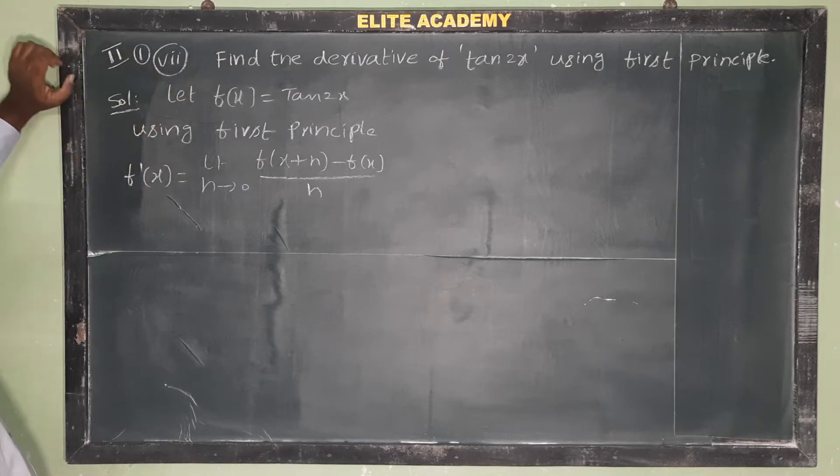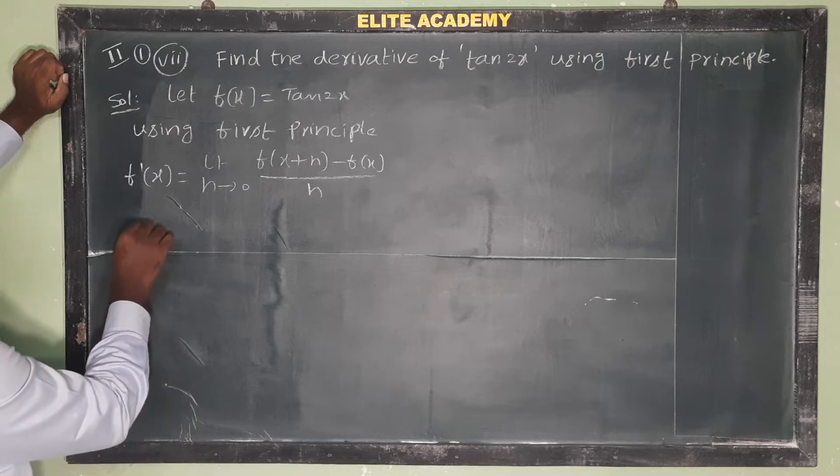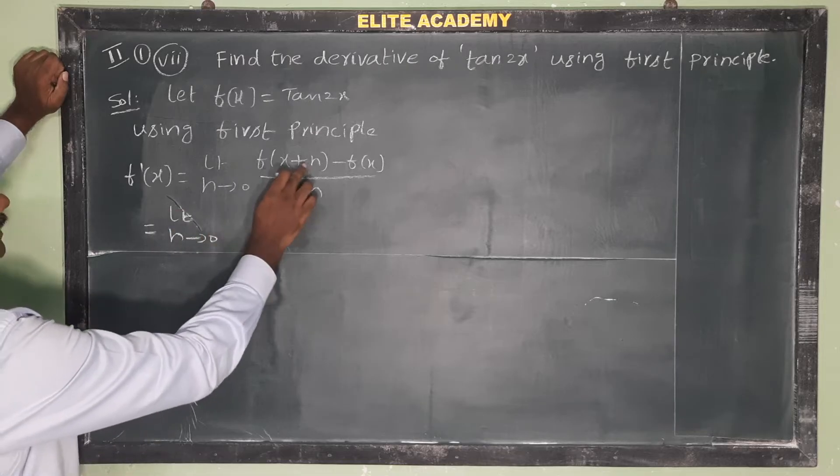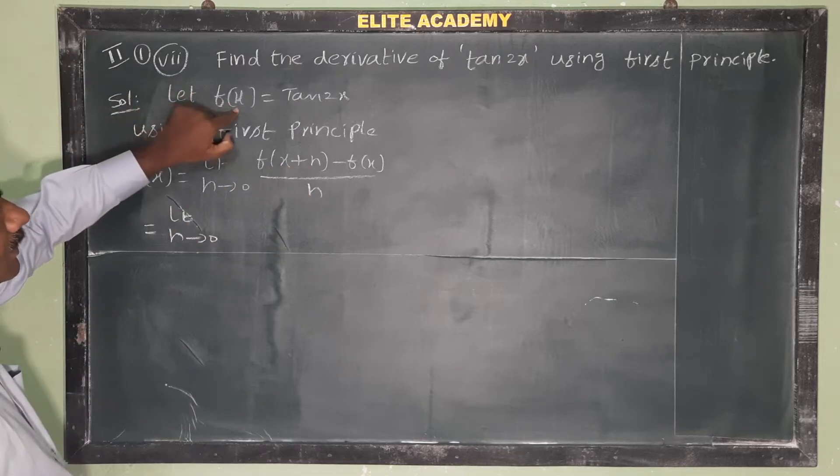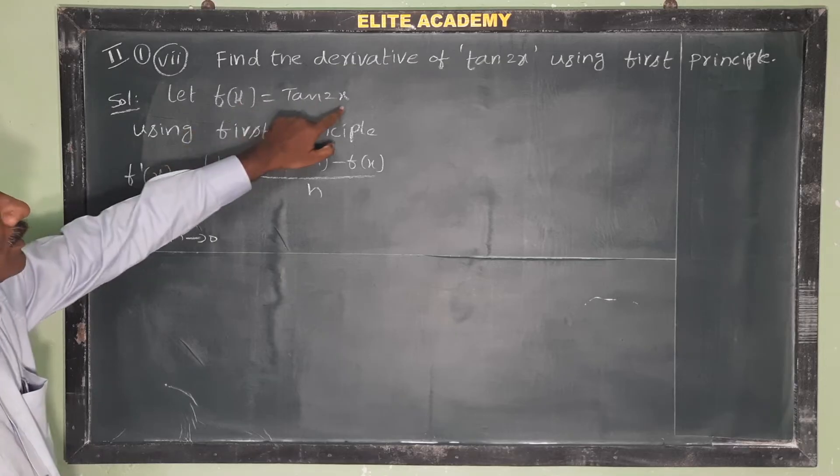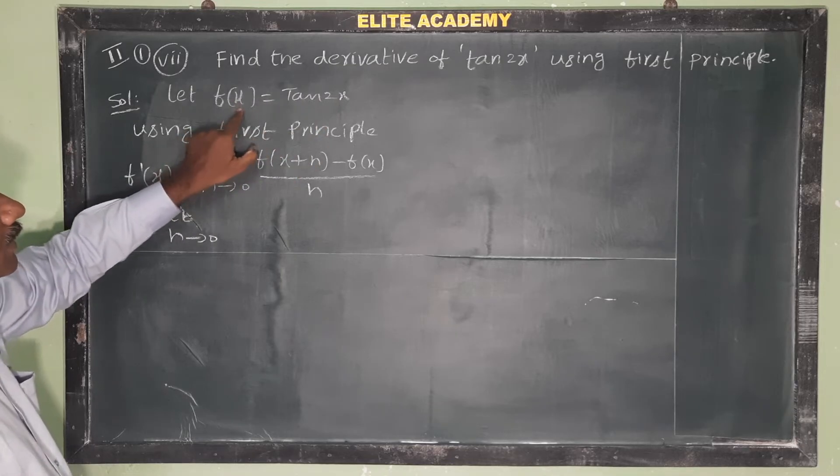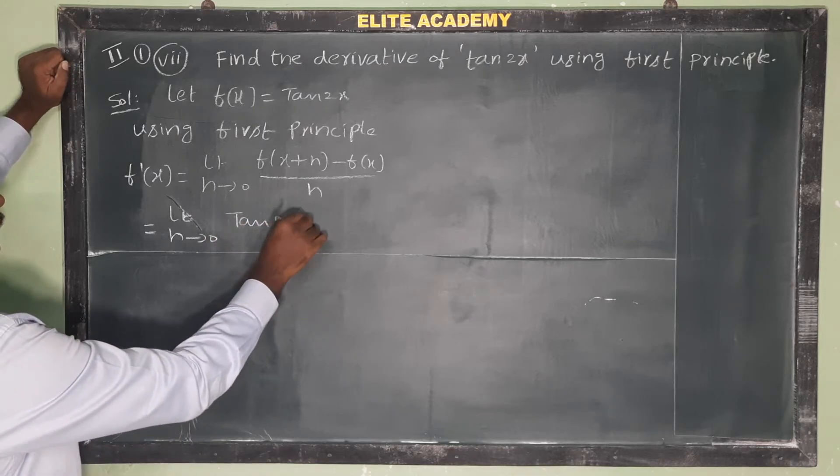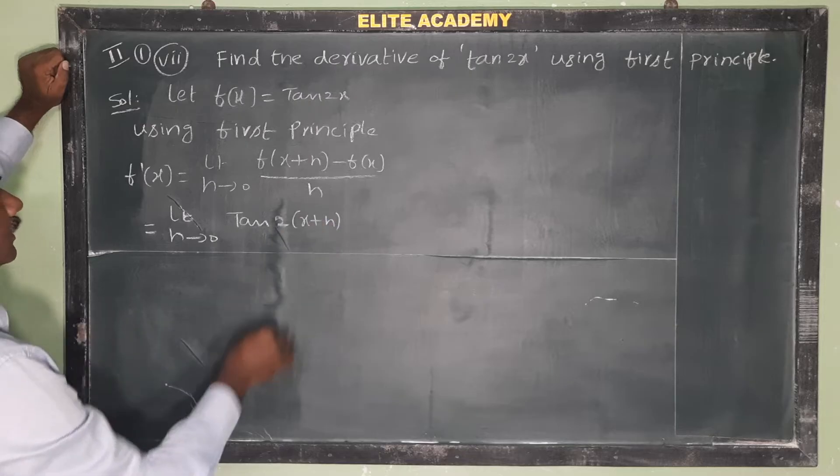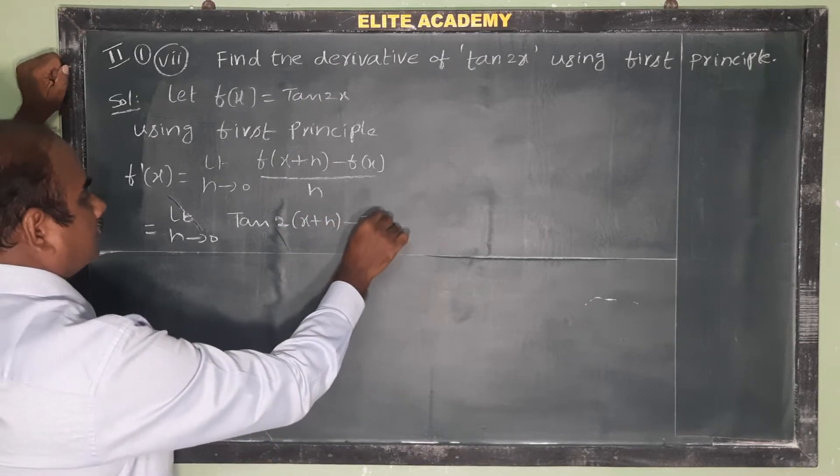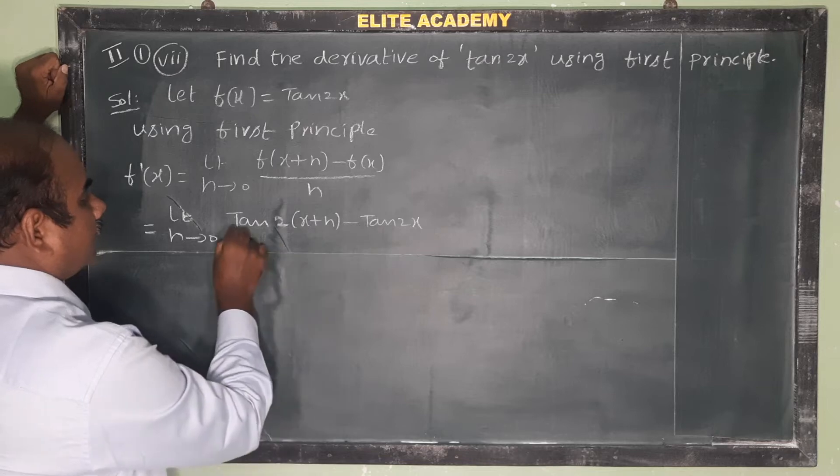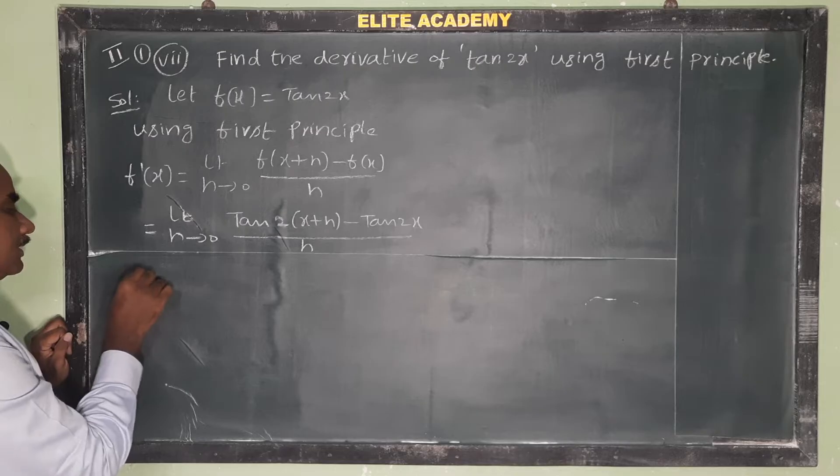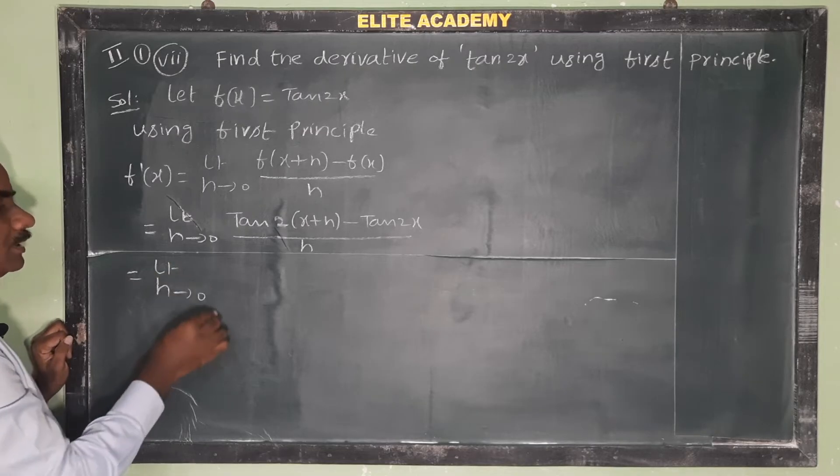To find the derivative of tan 2x, limit h tends to 0, f(x plus h) where f(x) is tan 2x. So f(x plus h) means tan 2 times (x plus h) minus f(x) means tan 2x, all by h.